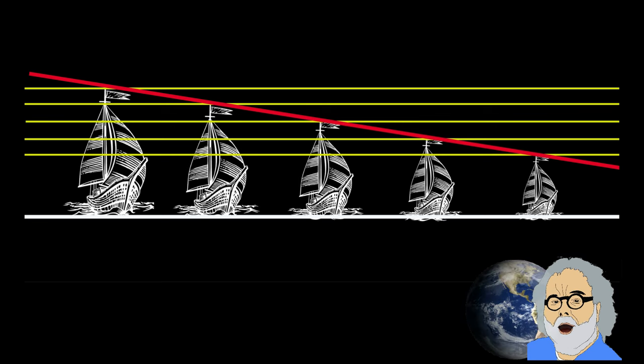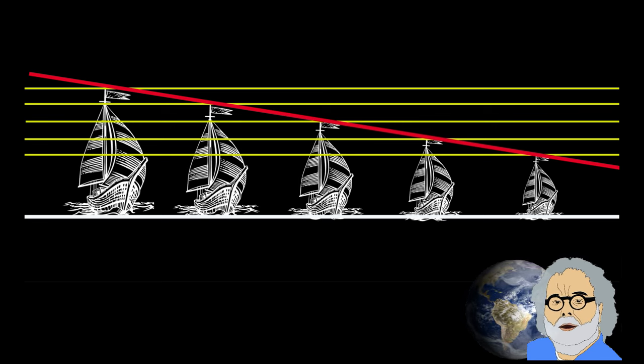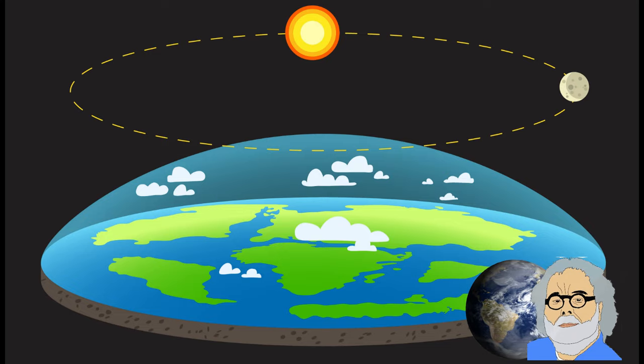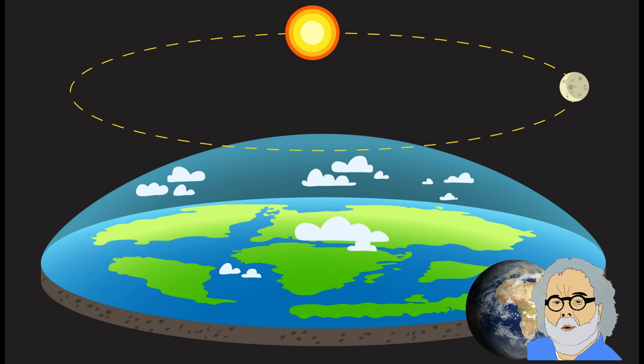Perspective is the phenomenon that at increasing distance the apparent height of an object above the surface gets smaller. This phenomenon follows a simple rule: the farther away, the smaller the apparent size. The sun is at the same height, no matter where you are on the flat earth.